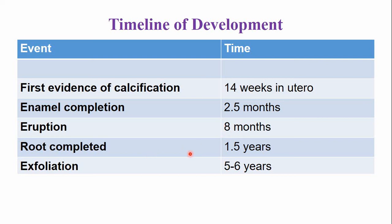The root is completed around the age of 1.5 years, and this tooth is lost by the process of exfoliation around the age of five to six years. Around the age of six years, the mandibular deciduous central incisor is replaced by the permanent mandibular central incisor. This tooth remains in function for around five years.